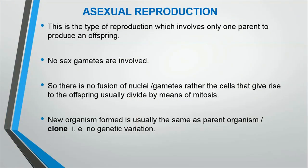Asexual reproduction is the type of reproduction which involves only one parent to produce offspring. There is no need for a male or female organism — just one parent can produce several offspring. No sex cells or gametes are involved, so there are no sperm cells or egg cells. There is also no fusion of nuclei or gametes. The cells that give rise to offspring divide by means of mitosis, or mitotic cell division. Simply put, there is no fertilization in asexual reproduction.